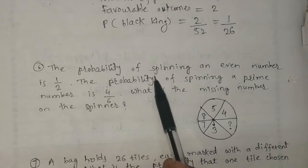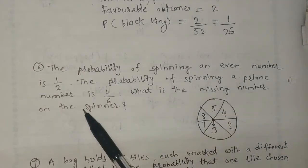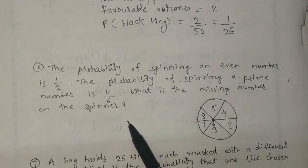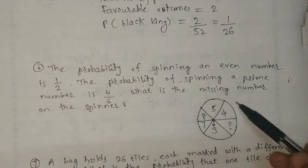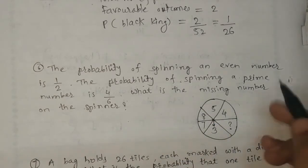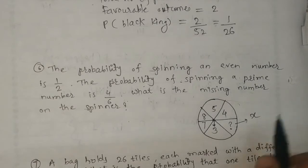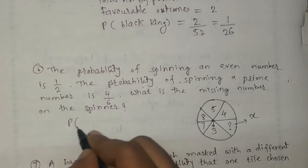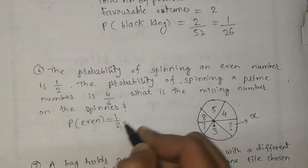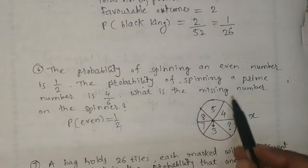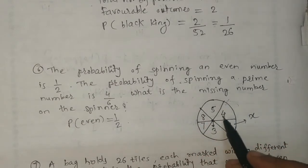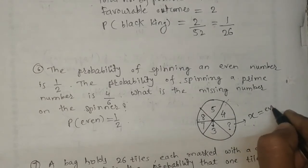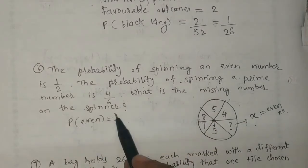The next question: the probability of spinning an even number is 1 by 2, and the probability of spinning a prime number is 4 by 6. We have to find the missing number on this spinner. Let the missing number be X. Since the probability of an even number is 1 by 2, and even numbers on the spinner are 4 and 8, X must also be an even number.